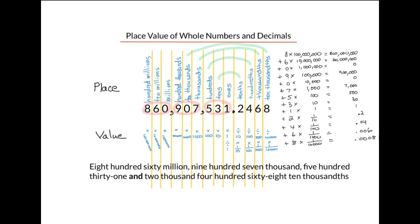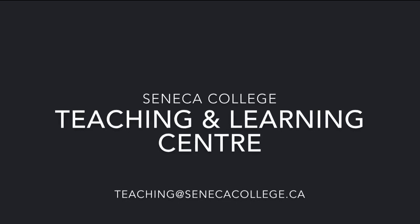To sum up: each digit in a number has a place and a value. As we move from right to left, the value of a digit's place increases by a multiple of ten. The digits to the left of the decimal are grouped in threes. The names of the decimal places of a number end in 'ths', and the names of the whole places of a number end in 's'. And there you go.